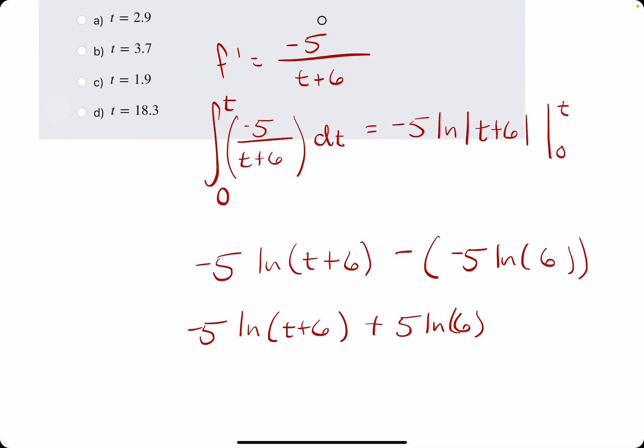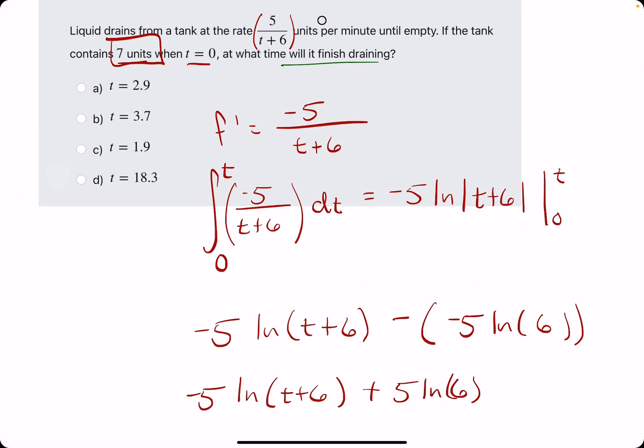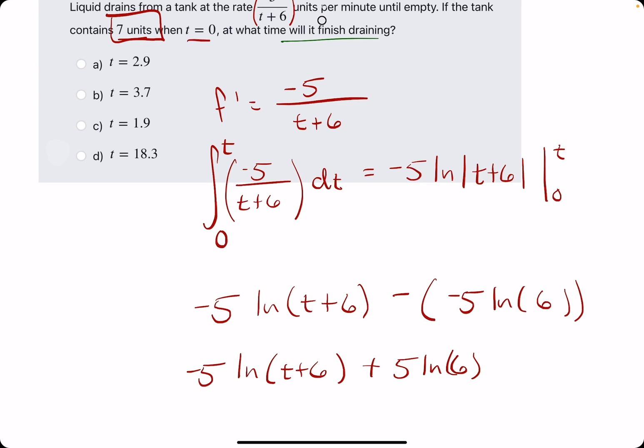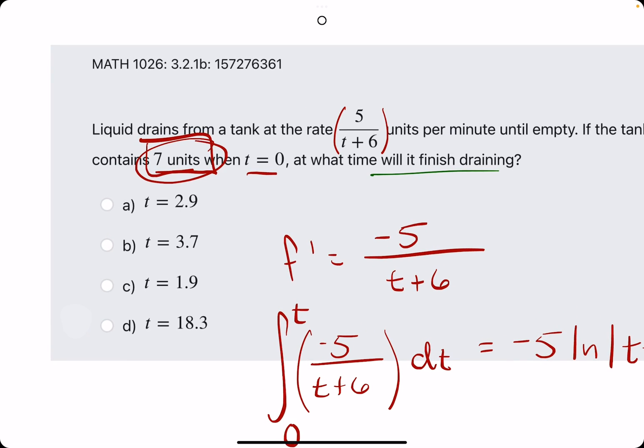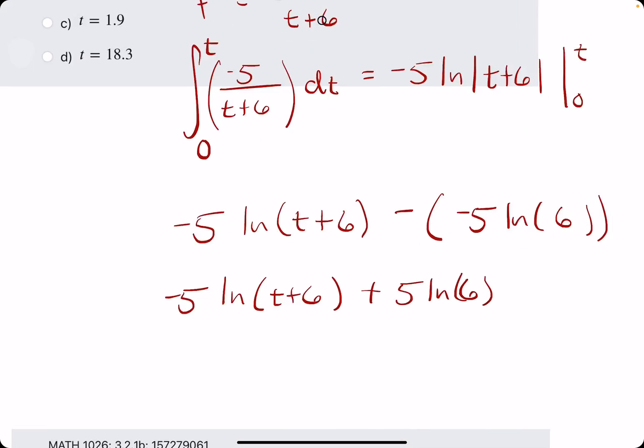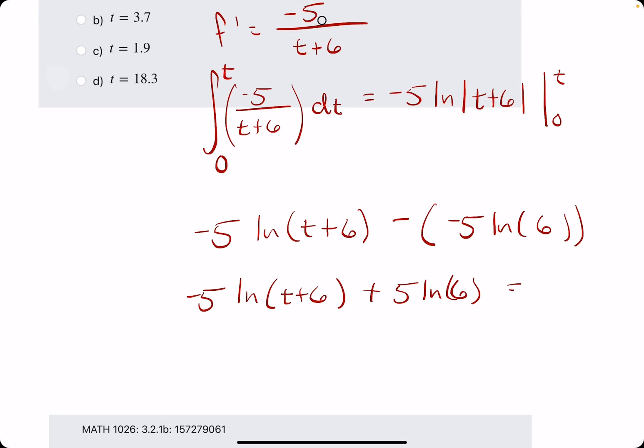Now what do we know? This is the difference, this is the change in water from zero to time t. We know that the starting amount was seven, and we're trying to find at what time will it finish draining. In other words, if it's starting at seven units full of water, we want to know when this change from zero to t will equal seven.